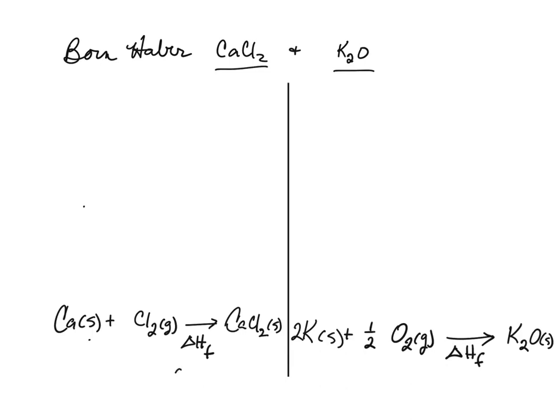We would call these the overall reactions — this is the overall reaction for both Born-Haber cycles. What we want to do in our Born-Haber cycle is turn our elements into just gaseous atoms. There's a reason for this that I will get into, but that's the next step.